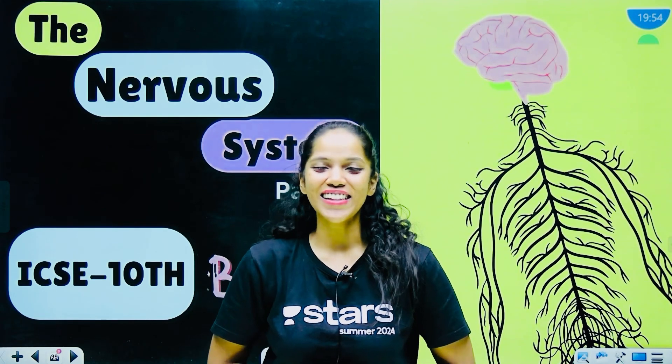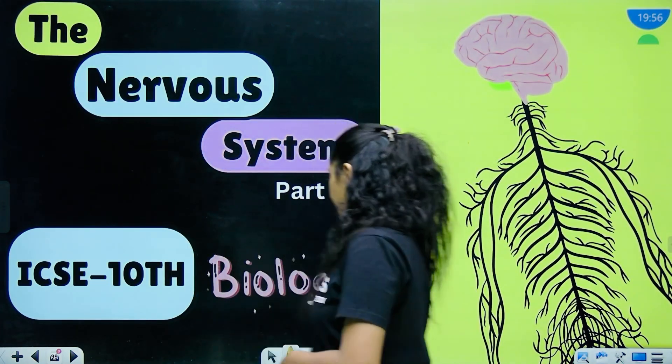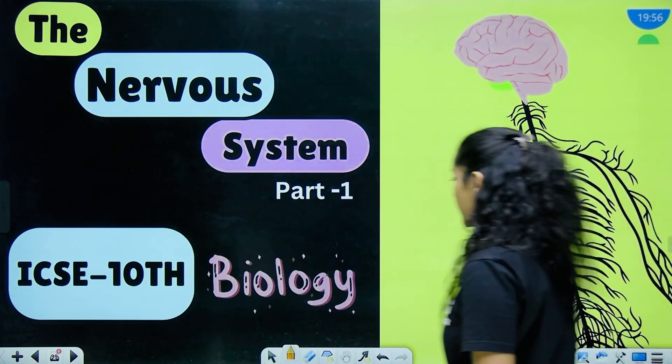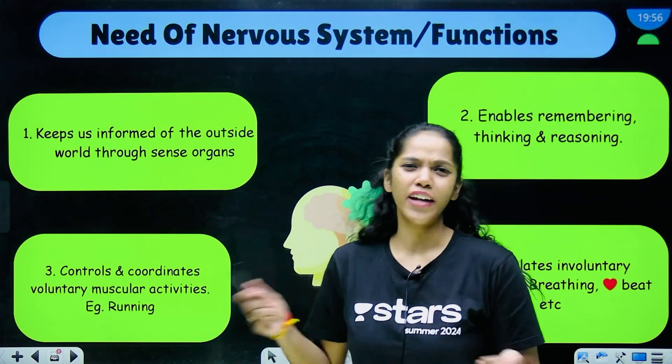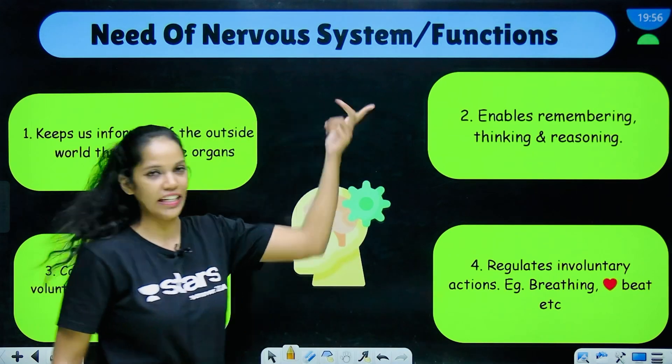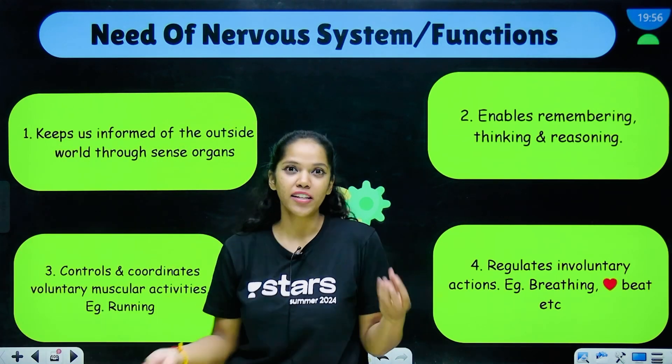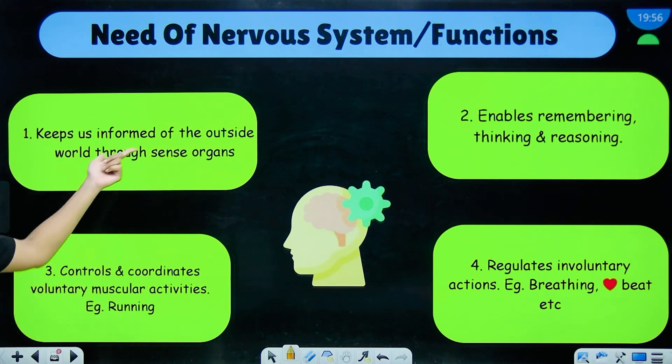So let's get started. Speaking of the nervous system, let's first try to refresh our memory on what is the need for the nervous system. It helps us be aware of our surroundings, it keeps us informed of the outside world through our sense organs.